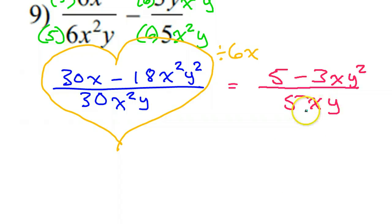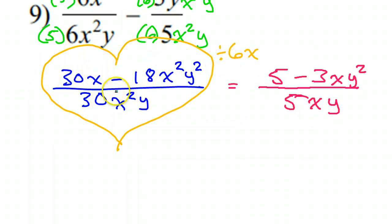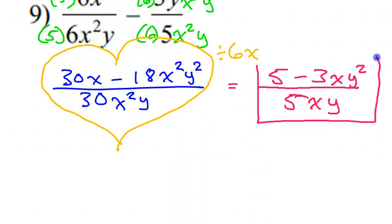Notice, glancing one more time to make sure, there's nothing that will factor, and there's no common factor shared by all three. I cannot cancel out these fives because they're connected by subtraction. I cannot cancel out these x's either, for the same reason. I can only do what I did because I did it to all three — all or nothing. But this is the answer.